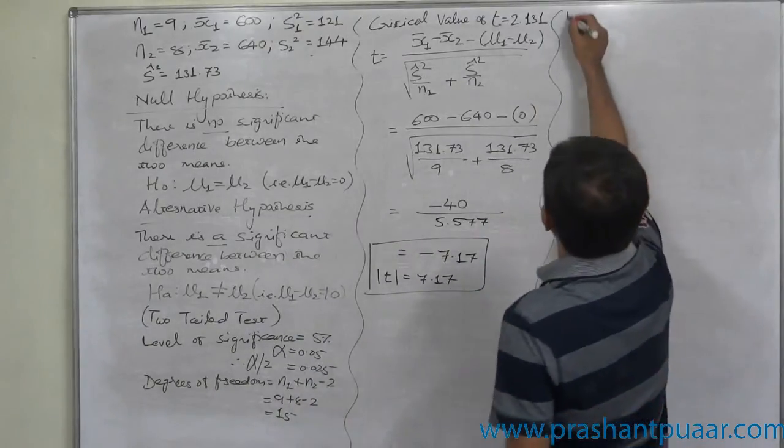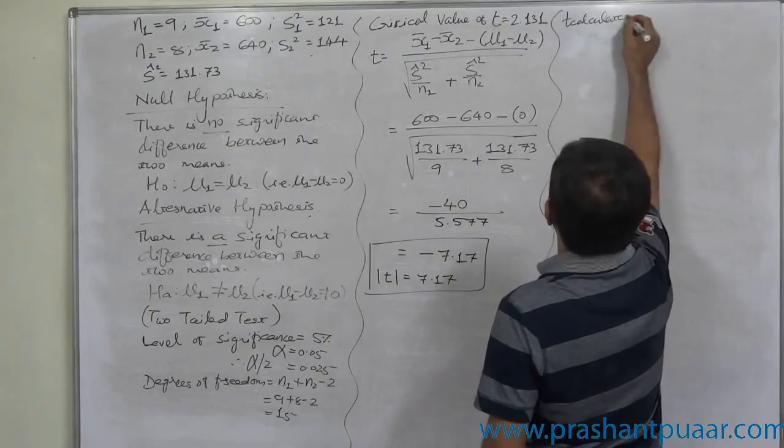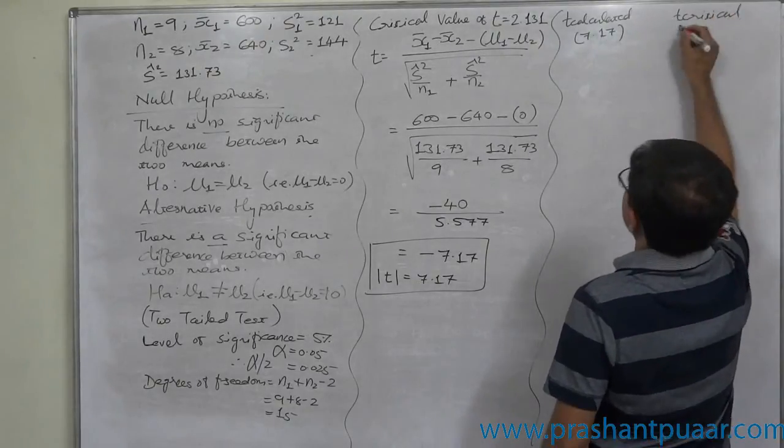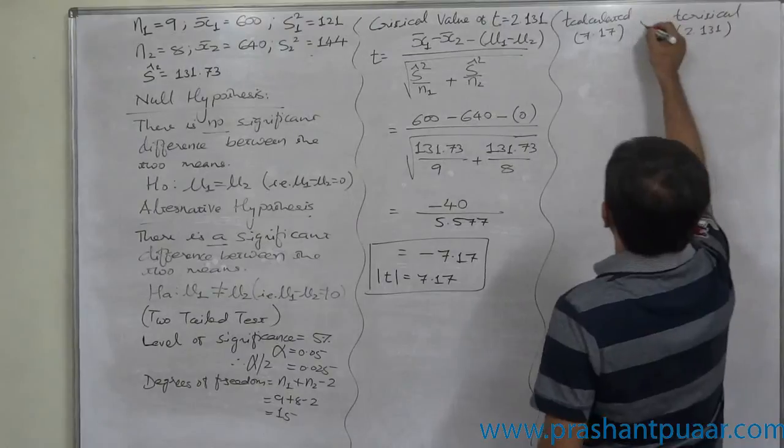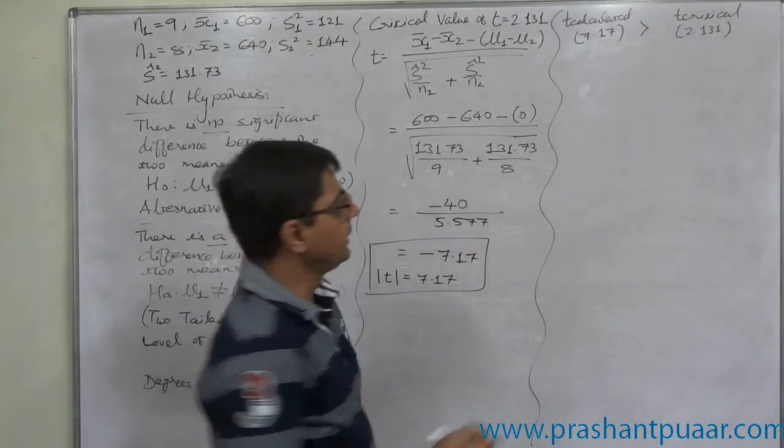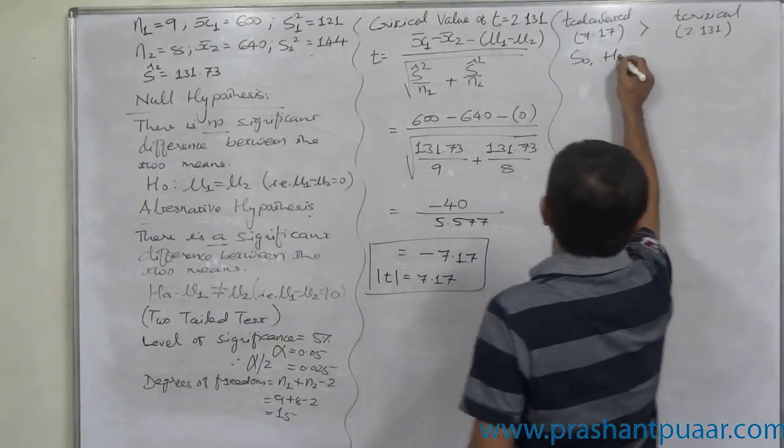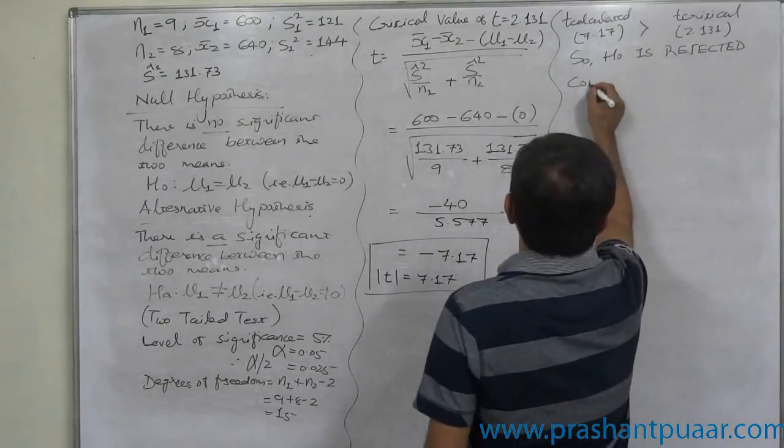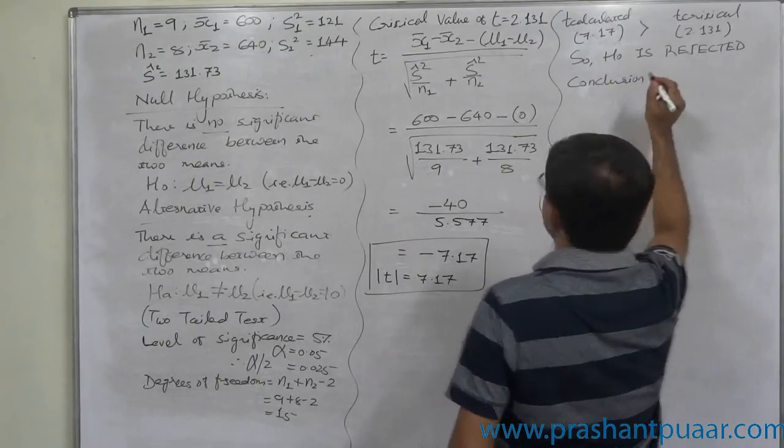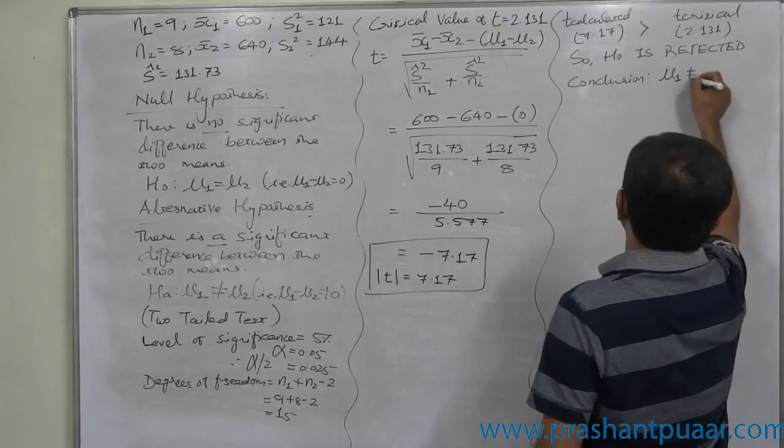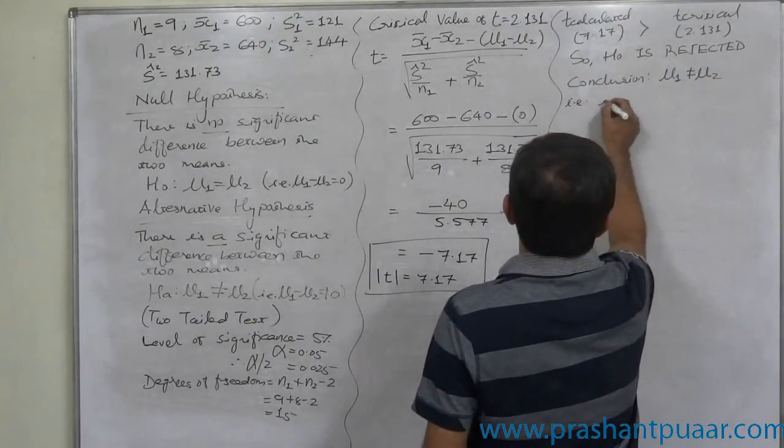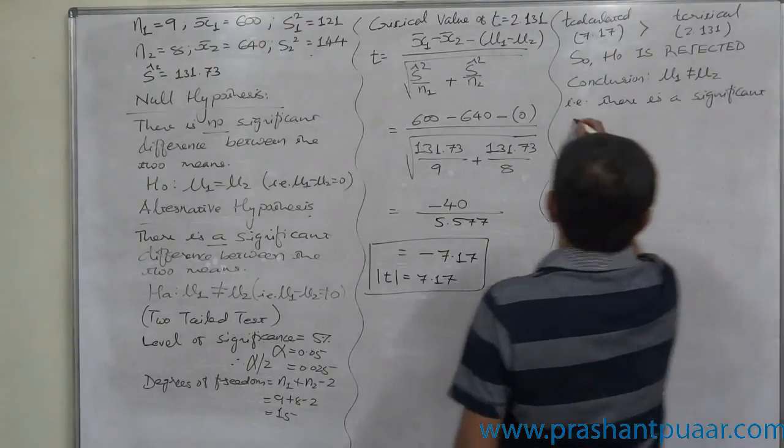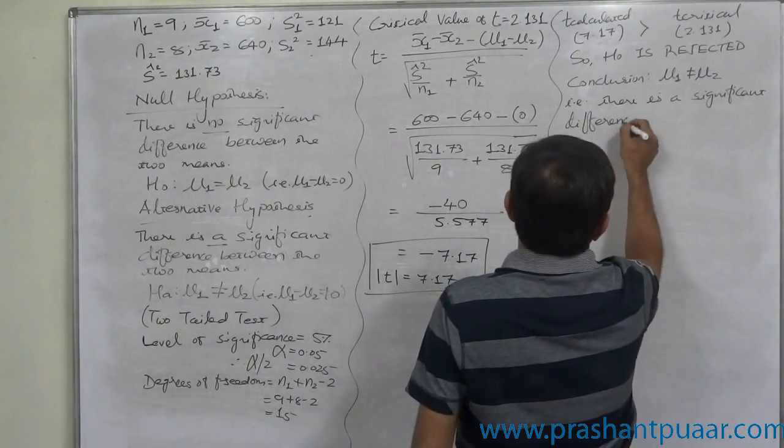Comparison: t calculated 7.17, t critical 2.131. Calculated value of t is greater than the critical value, so the null hypothesis is rejected. Conclusion is our alternative hypothesis, and that is μ₁ ≠ μ₂. That means there is a significant difference between the two means.